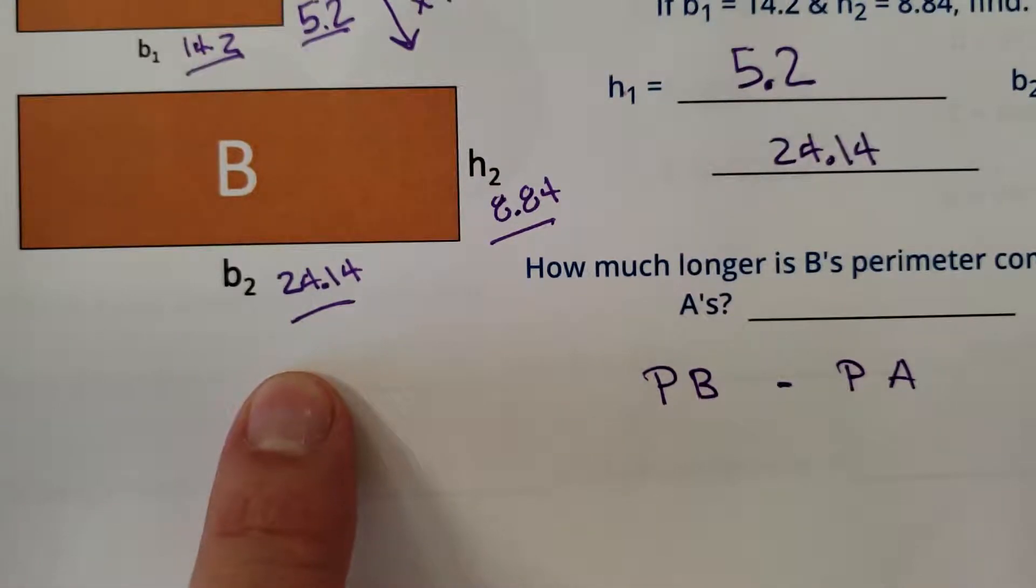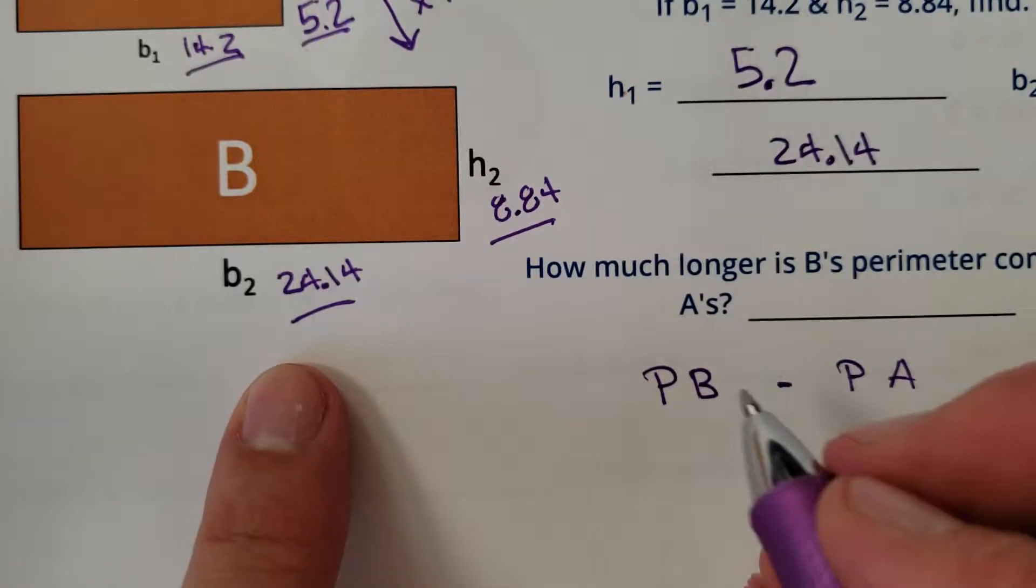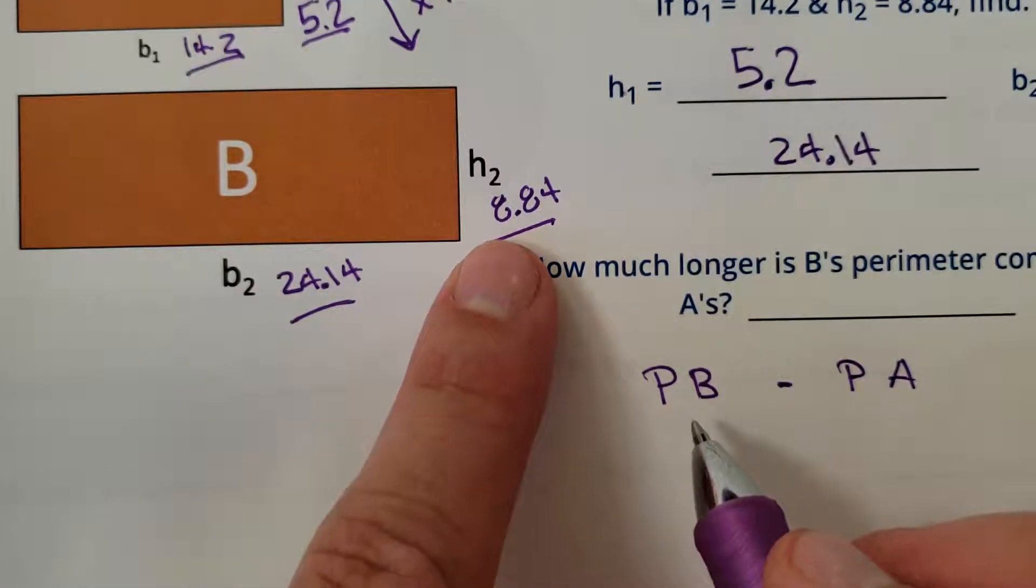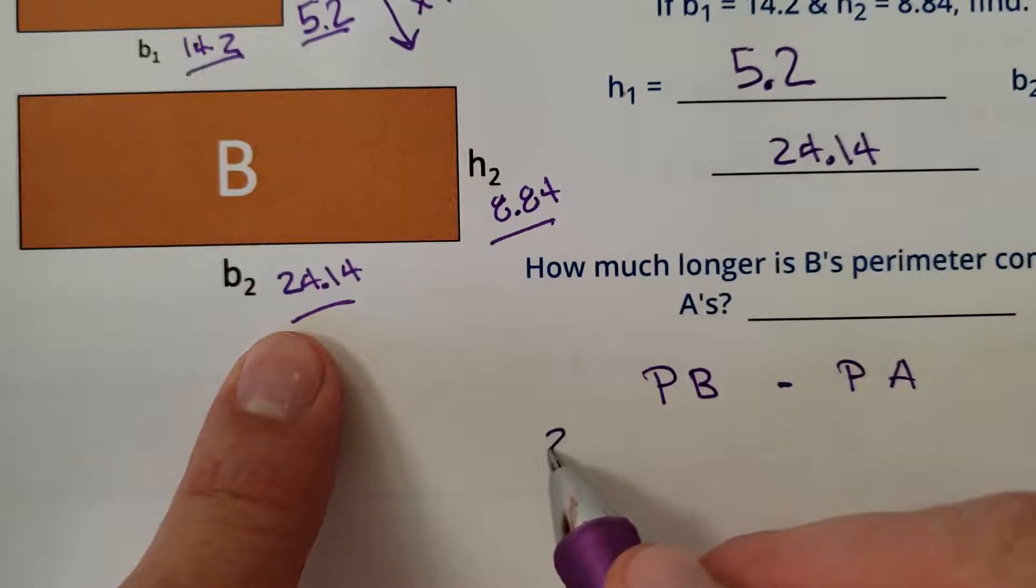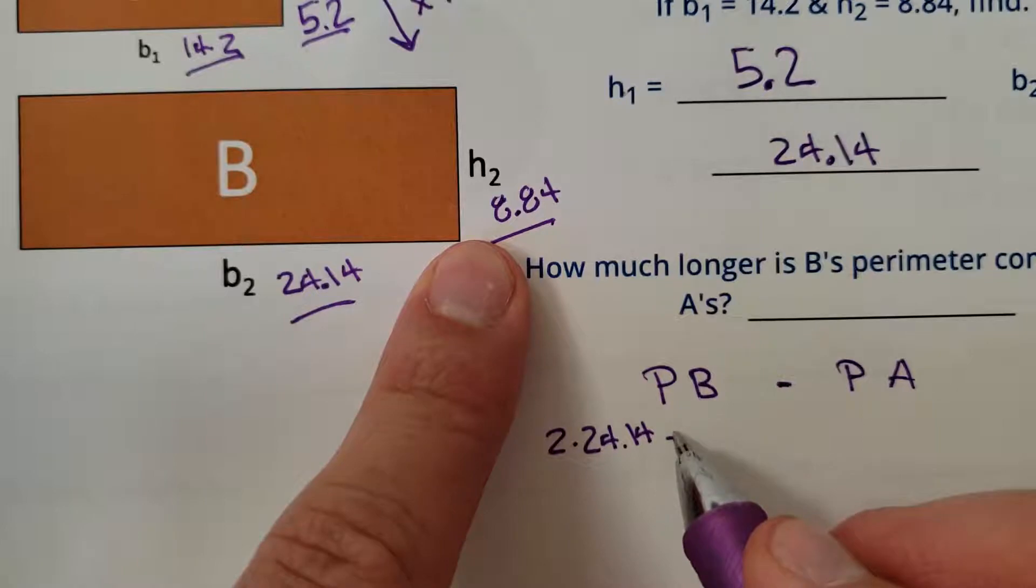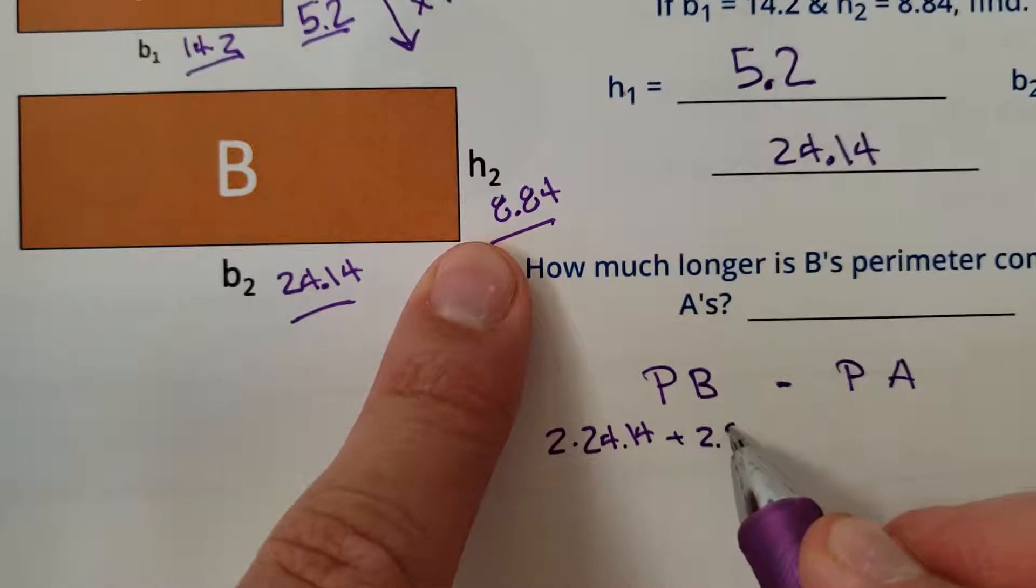All right. Luckily, we have everything we need. How do you find the perimeter of a rectangle? Well, it's two lengths times two widths or two heights times two, whatever. All right. It's all the same. So the perimeter of B is going to be two times 24.14 plus two times 8.84.